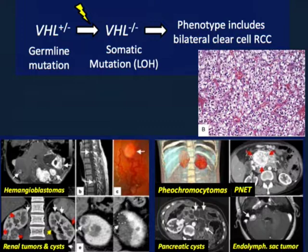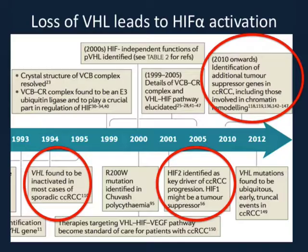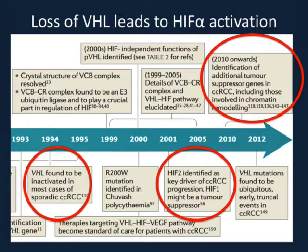Patients have a germline mutation in the VHL gene and then take another hit — a loss of heterozygosity — which results in the manifestation of clinical VHL, including bilateral, multifocal, and early-onset clear cell RCC. The other extra-renal symptoms occur in different subsets of VHL. The key findings to highlight are that in the mid-1990s, mutations in VHL were found to be altered in most cases of sporadic RCC. It was already known to be associated with familial disease, and a lot of the downstream effects from abnormal VHL signaling result in increased HIF-2, which appears to be a major driver of clear cell RCC.